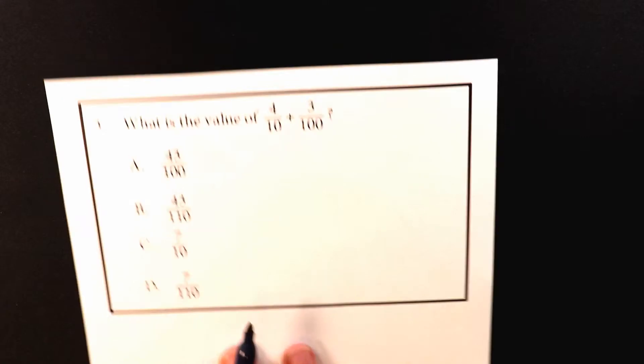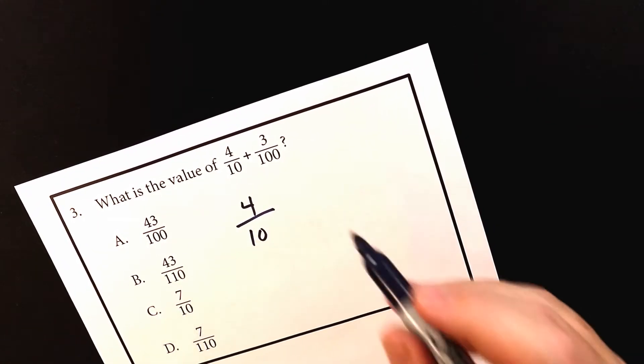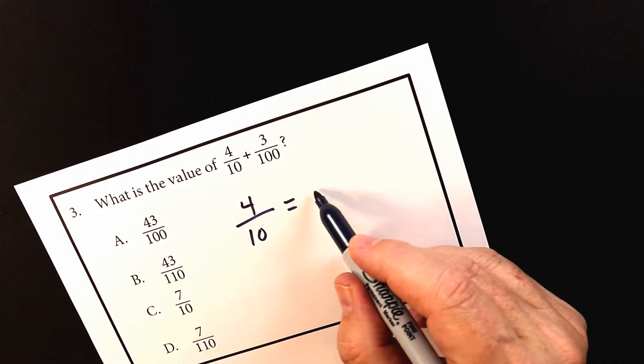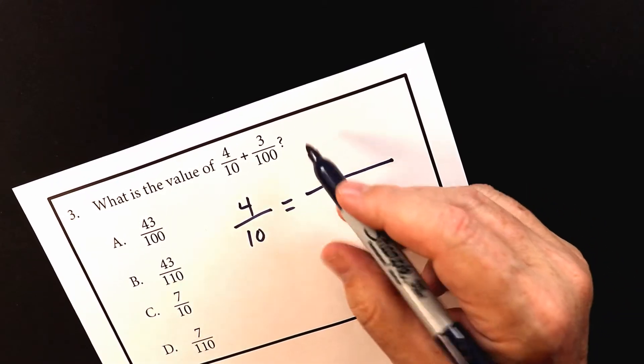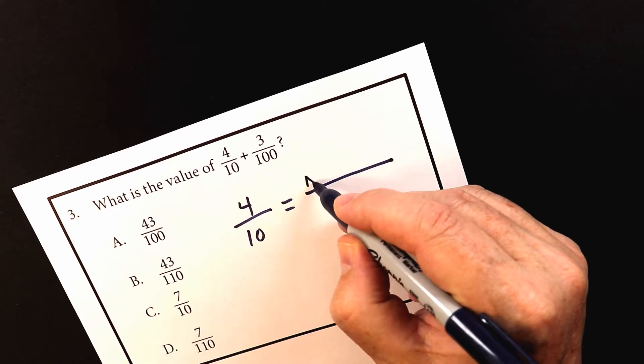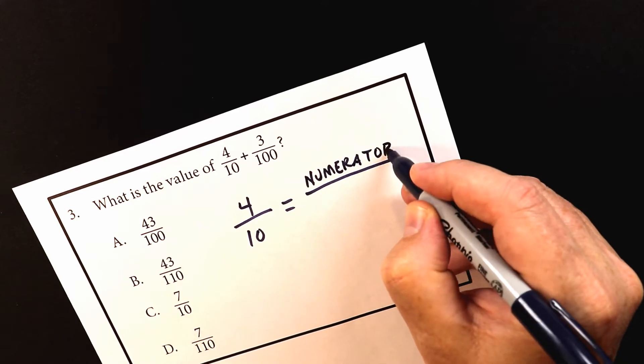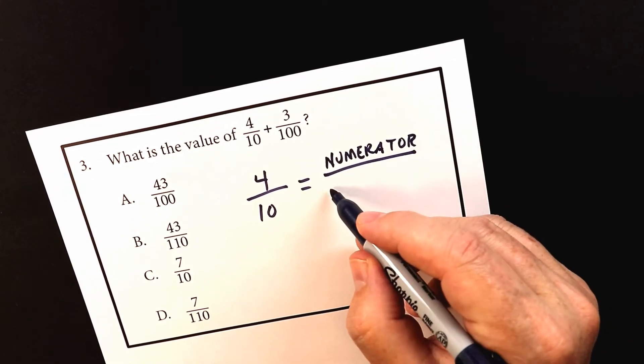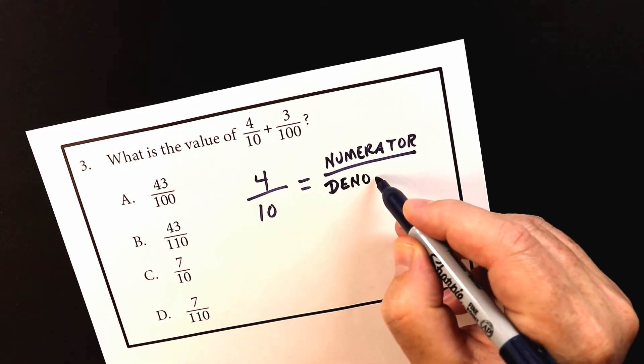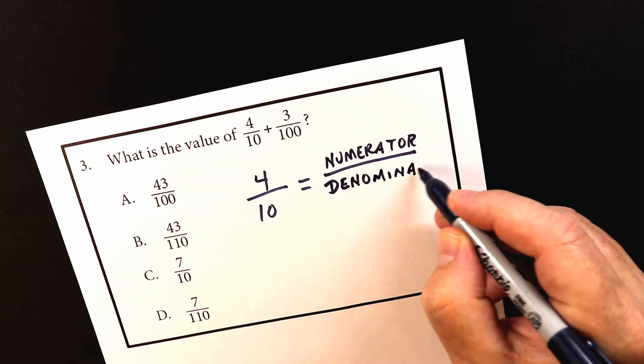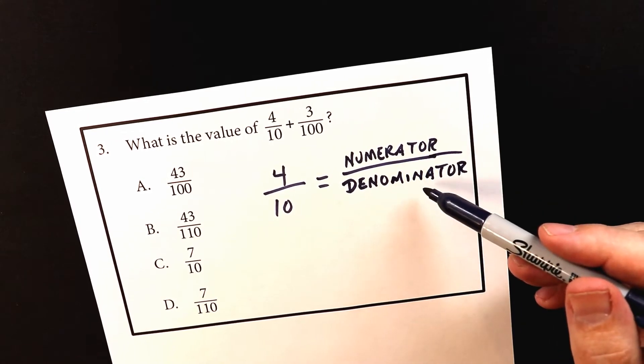So we have 4 over 10. Now one of the things that I want to review is when you have a fraction, each of these numbers has a special name depending where it's located. The top one is called the numerator. So the numerator on the top, denominator on the bottom.